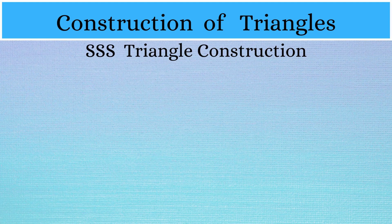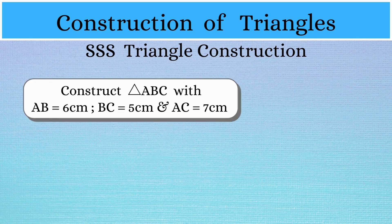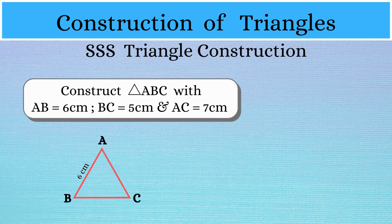Here we are asked to construct a triangle when the measurements of the sides are given. For example, let's say we have to construct a triangle ABC with AB equal to 6 cm, BC equal to 5 cm and AC equal to 7 cm. As a first step, let's draw the given triangle roughly marking the measurements. Here we see a rough sketch of triangle ABC with its measurements not to scale.